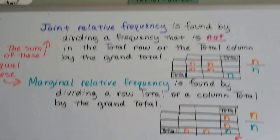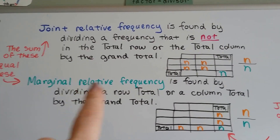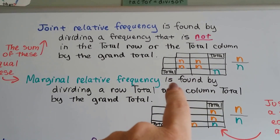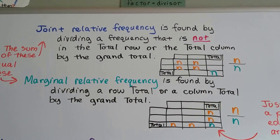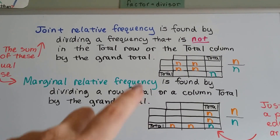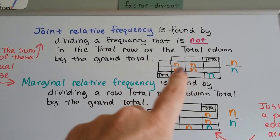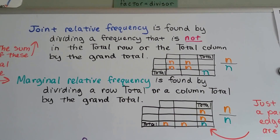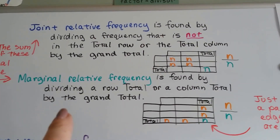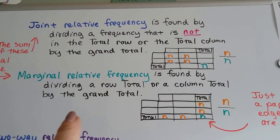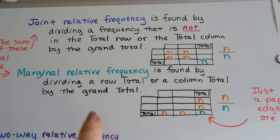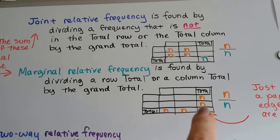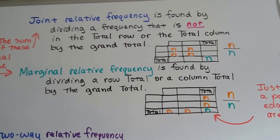Joint relative frequency is found by dividing a frequency that's not in the total row or the total column - so that would be any one of these four in the center - we divide that by the grand total. Marginal relative frequency is found by dividing a row total or column total by the grand total. So that would be any of these totals divided by the grand total.